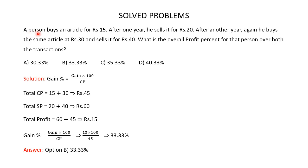A person buys an article for Rs 15. After one year he sells it for Rs 20. After another year he again buys the same article at Rs 30 and sells it for Rs 40. What is the overall profit percent for that person over both transactions? You are given 4 answer options and you have to find the correct one.